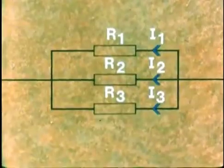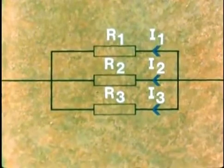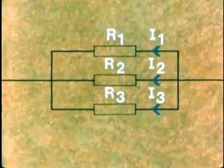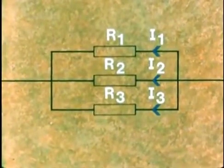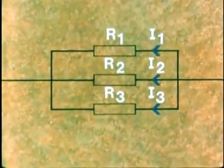Where the resistance is lowest, say R1, the current flowing I1 will be greatest. Where the resistance is greatest, say R3, the least current will flow.